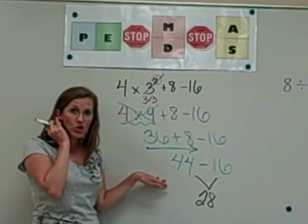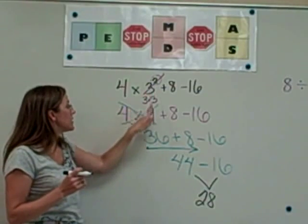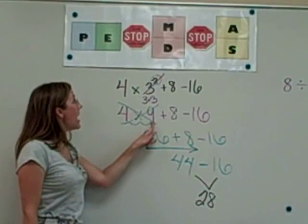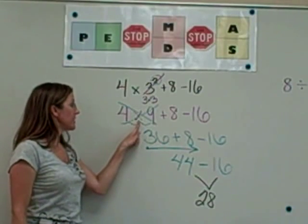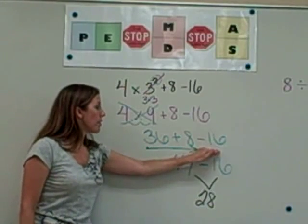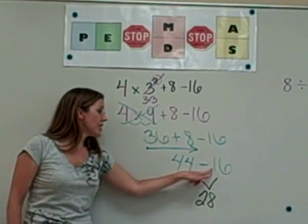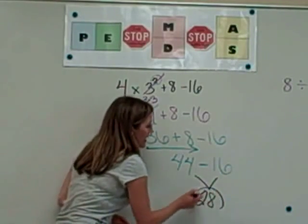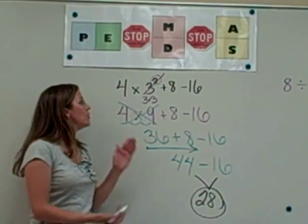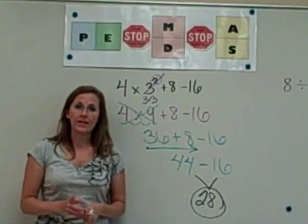So this problem is a little bit bigger, so I do want to go back over it. We started with our exponent. 3 squared is 9. We rewrote our problem. Next, we're going to do our multiplication. 4 times 9 is 36. We rewrote the problem. And then once we added, we had 44. Subtracting 16 gives us our final answer of 28. It really helps out if you write down each step and you kind of narrow it into your answer.